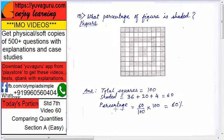So percentage equals to what? Shaded is 60 upon total, 60 upon 100 into 100. Why 100? Because percentage. Calculate, you get it 60%.